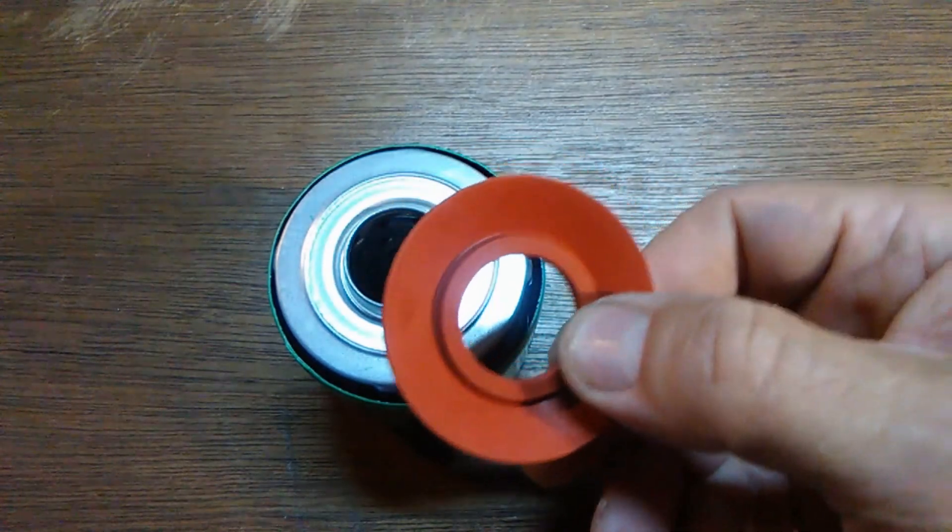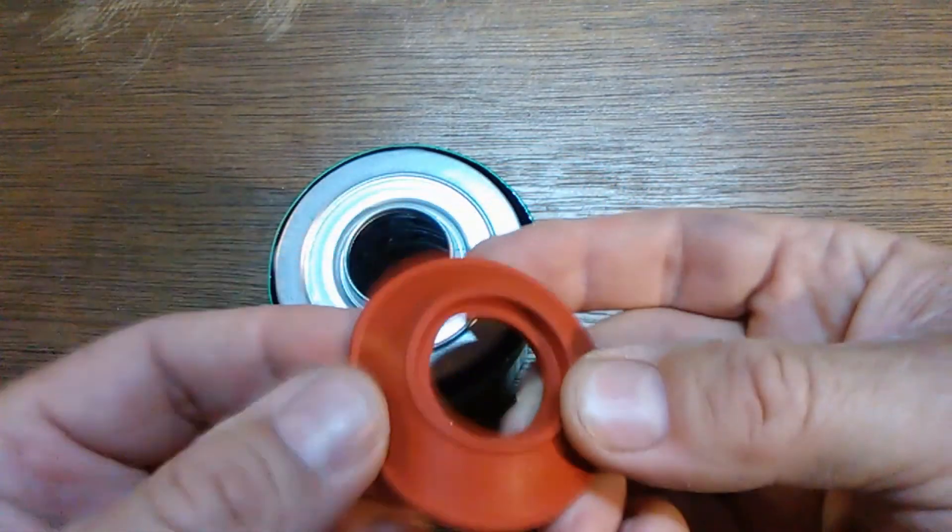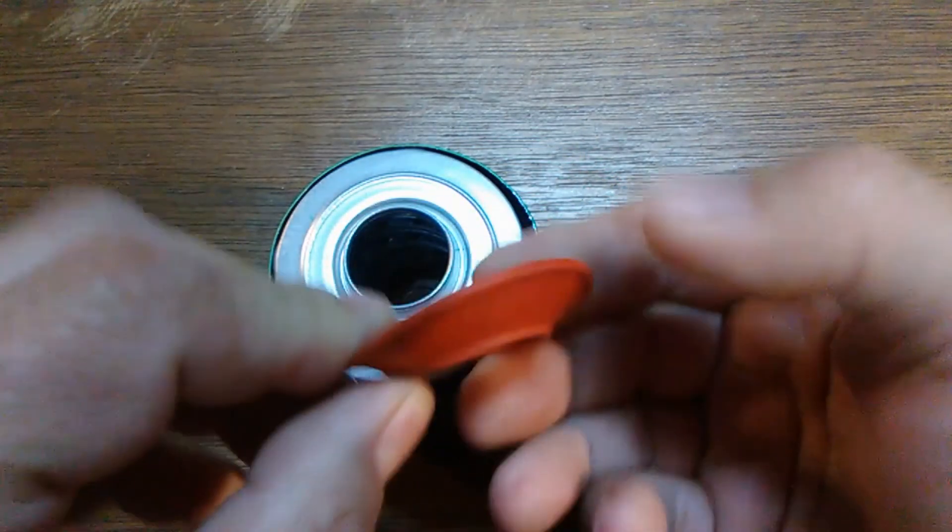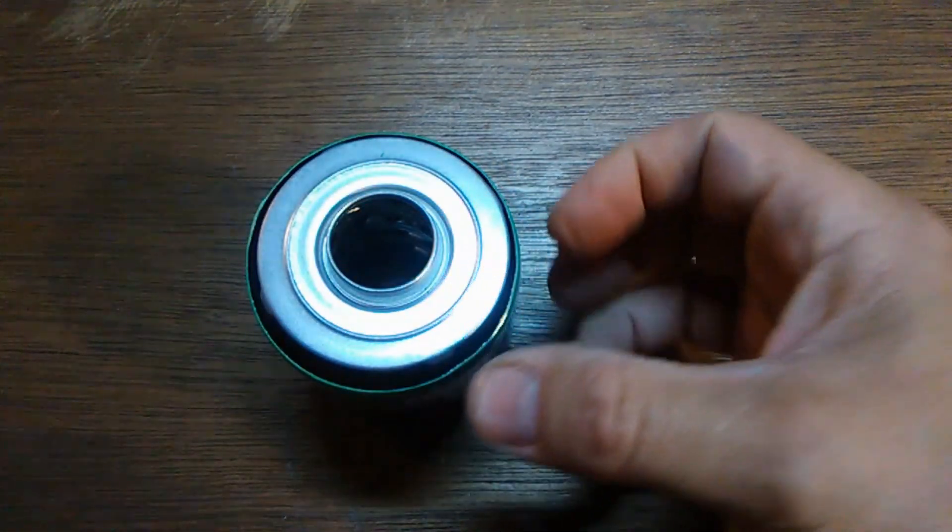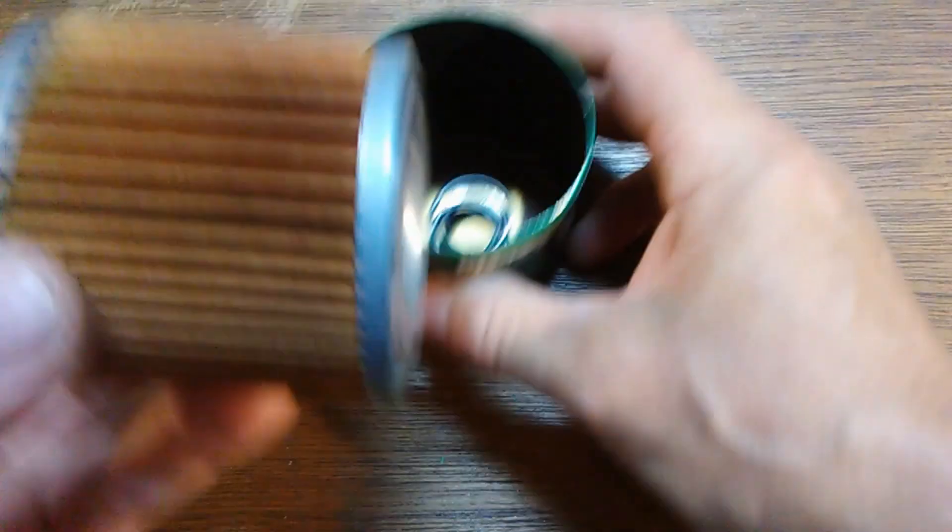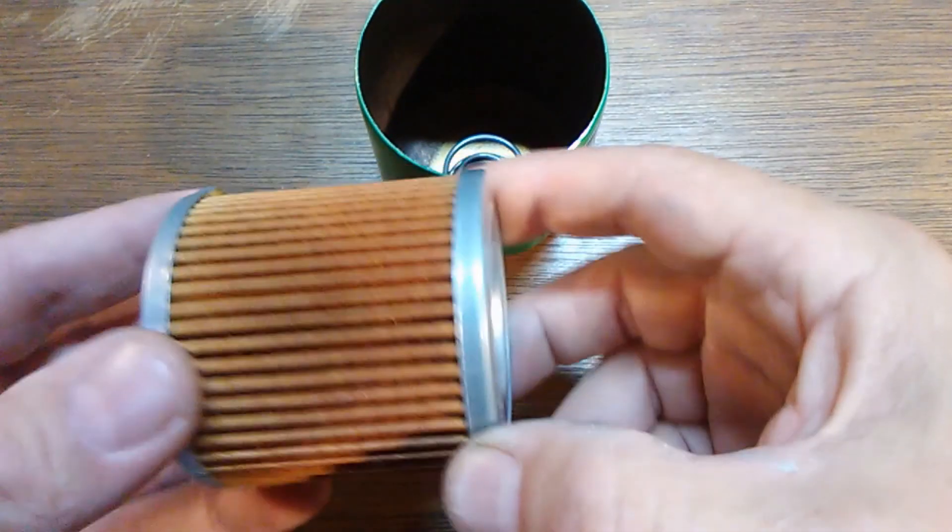You got your anti-drain bag valve. Which is silicone. It's nice and springy. Your filter media. I counted 55 pleats.